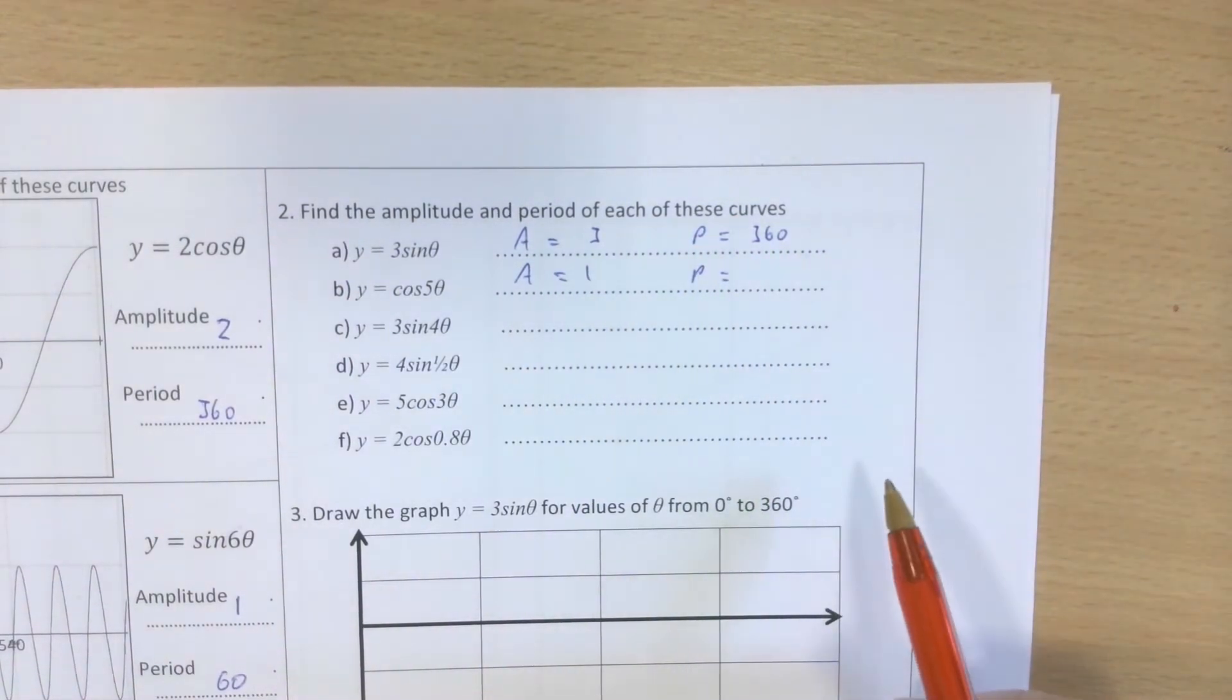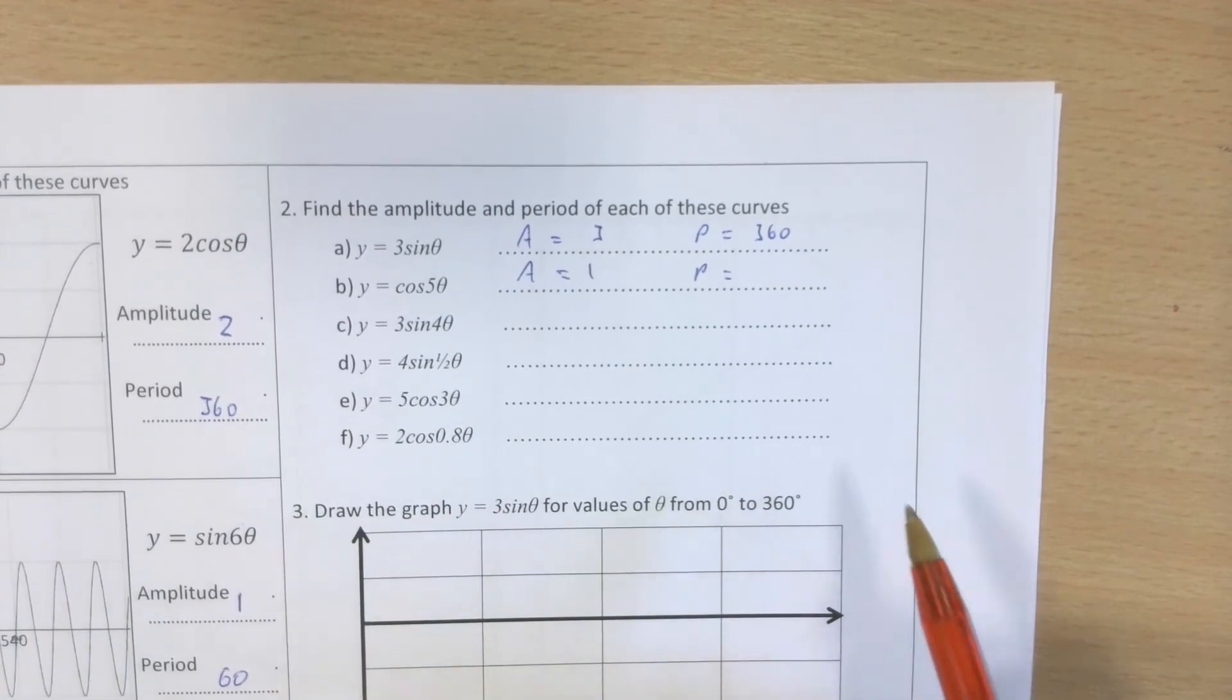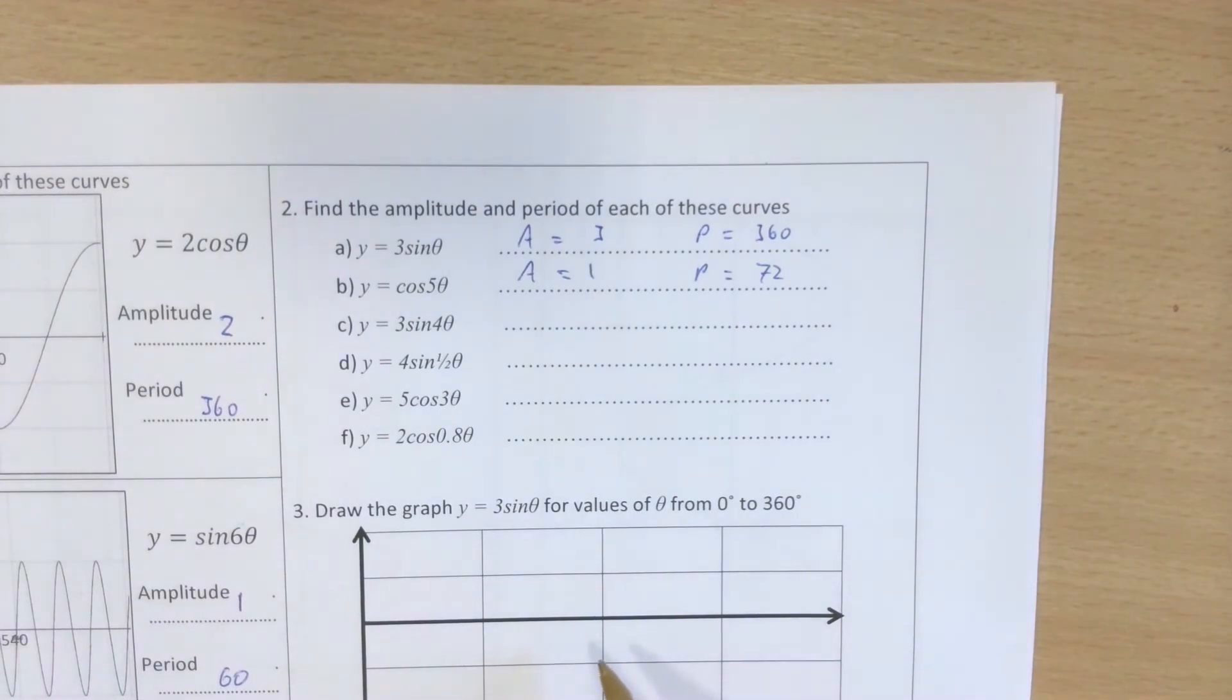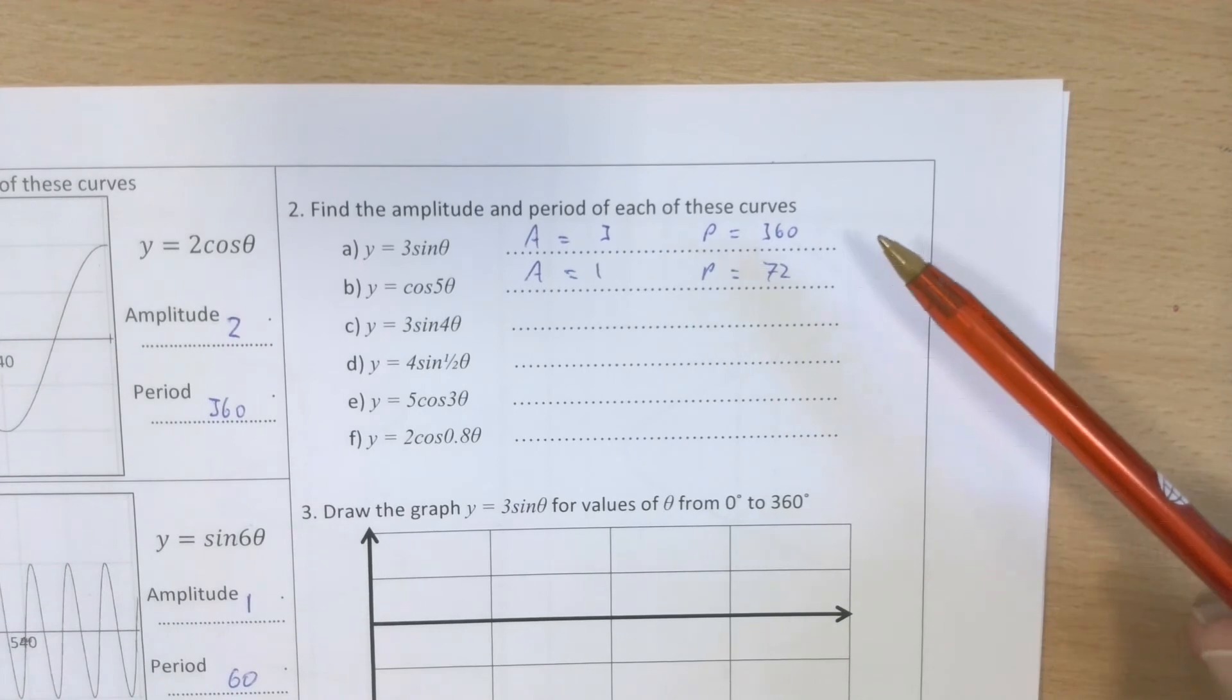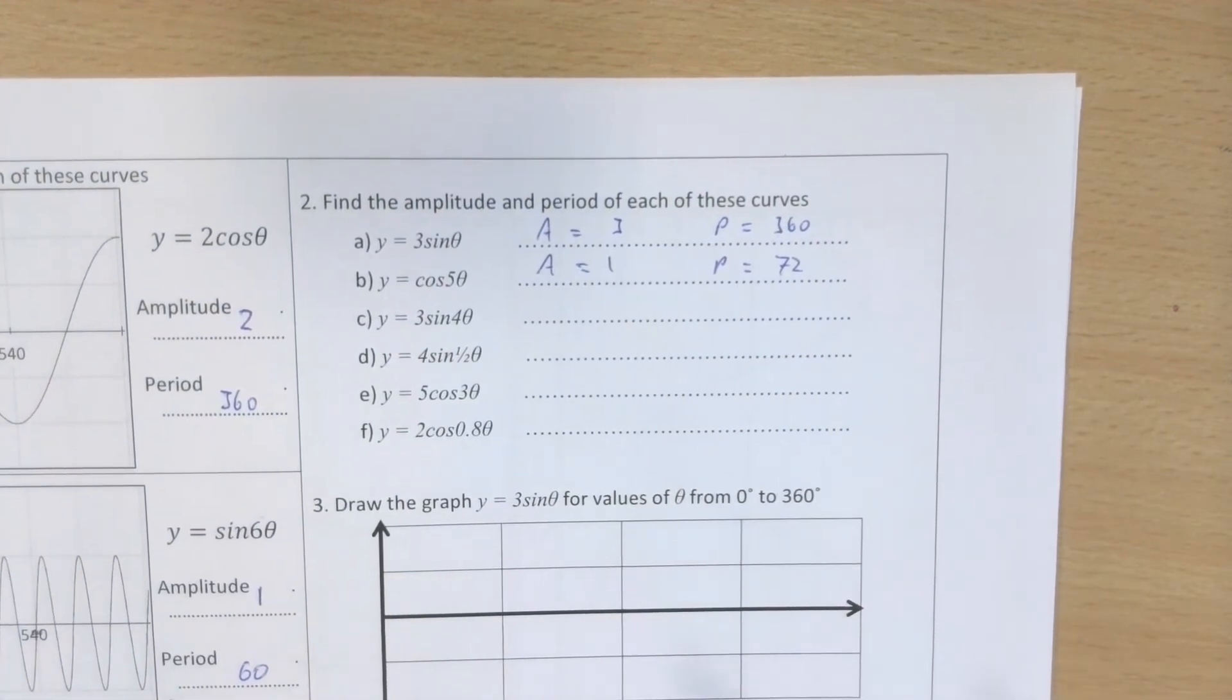And the height, 360 divided by 5, 72. I would carry on, but then you'd have no work to do yourself. You should be able to work out all the rest of these questions on this resource by following the stages that I've explained to you here.